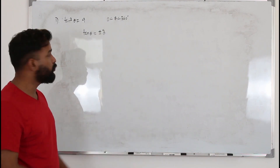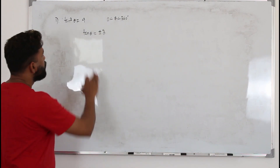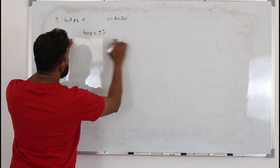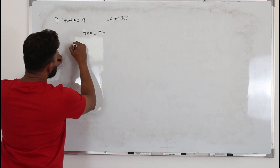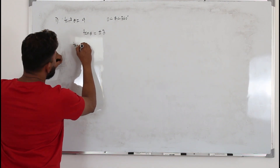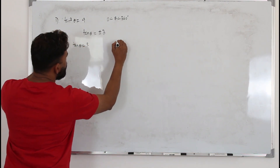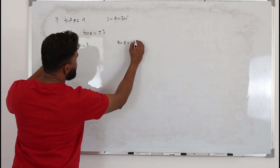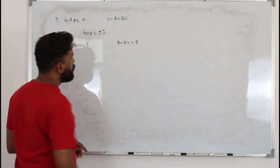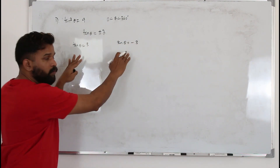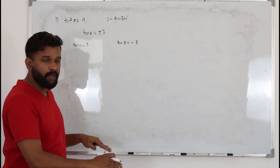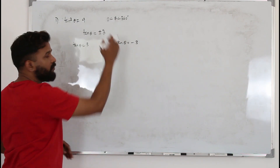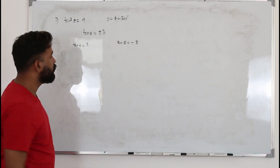Taking square root of both sides gives us two equations: tan θ = +√3 and tan θ = -√3. So you have two trigonometric equations — solve them separately within the given limit.